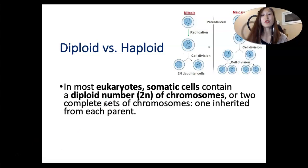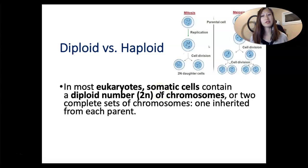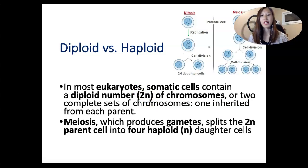In most eukaryotes — we are multicellular eukaryotes — our somatic cells, for example our skin cells, brain cells, lung cells, and red blood cells, are all diploid cells. There are two sets, or 2N, of chromosomes. This gives us two complete sets of chromosomes, one inherited from each parent.